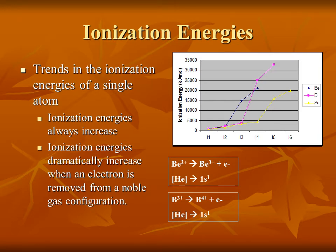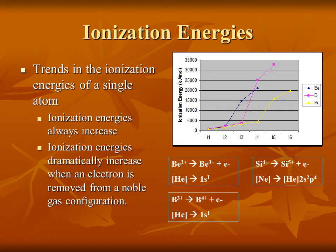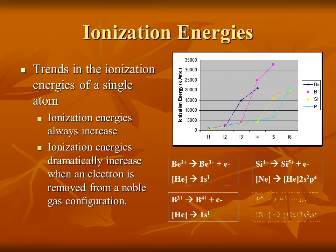Silicon has a big jump from the fourth to the fifth ionization energy. Silicon is down one period from beryllium and boron, hence the more gradual slopes. When silicon has a plus four charge, it's isoelectronic with neon; but when it gets a plus five charge, you are moving out of the noble gas electron configuration. The same thing applies to phosphorus: phosphorus with a plus five charge is in a neon electron configuration, but phosphorus with a plus six charge is not. Silicon has 14 electrons and phosphorus has 15 electrons.